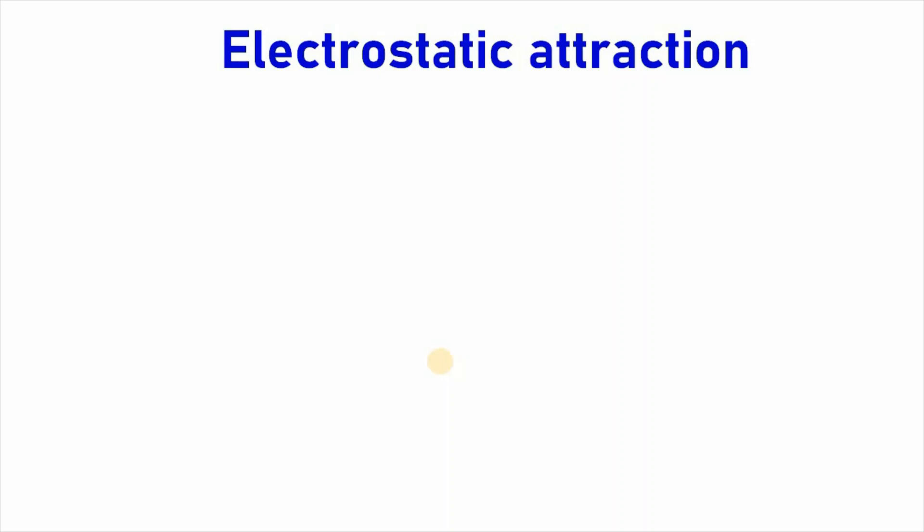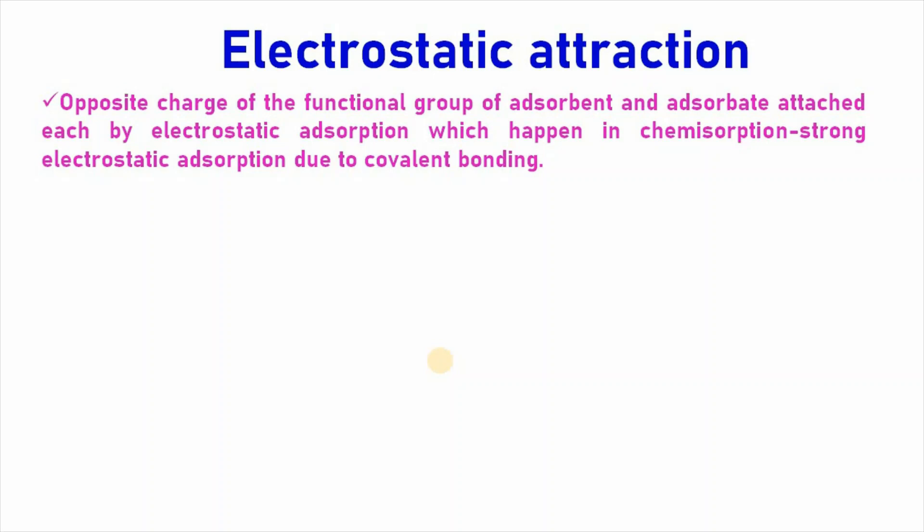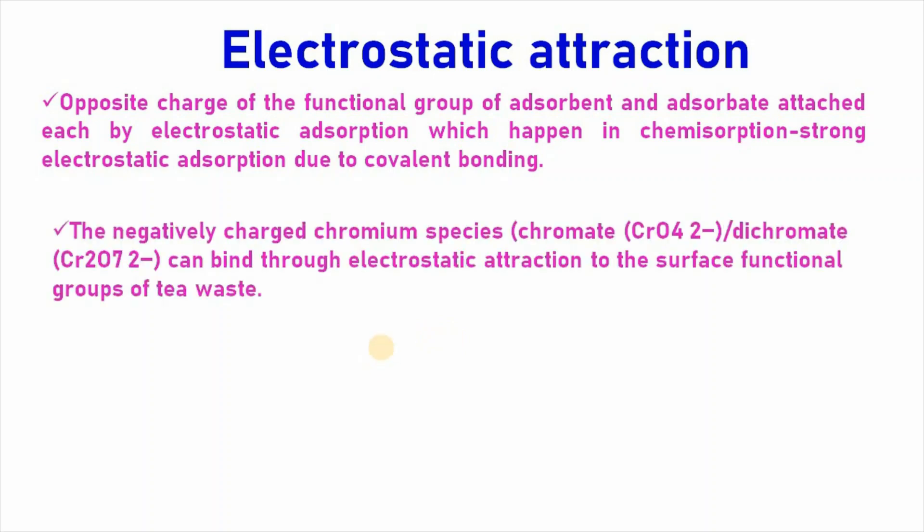Then comes electrostatic attraction where opposite charge of the functional group of adsorbent and adsorbate causes electrostatic adsorption which happens in chemisorption. It is strong electrostatic attraction due to covalent bonding. For example, the negatively charged chromium species can bind through electrostatic attraction to the surface functional group. And electrostatic attraction is readily occurred when negatively charged pollutants adsorbed on positively charged surface.